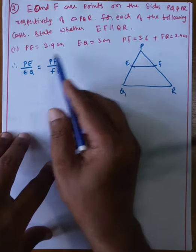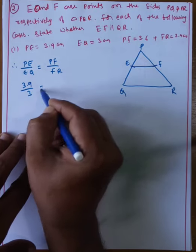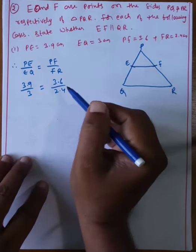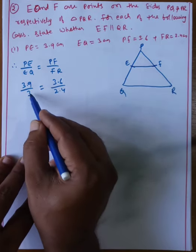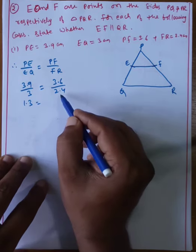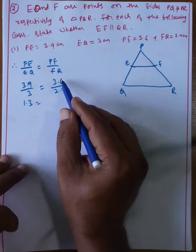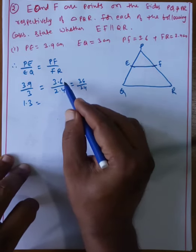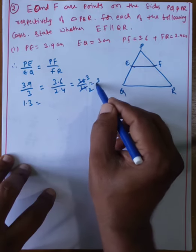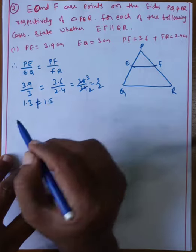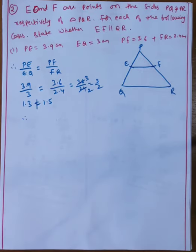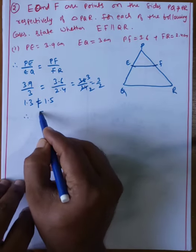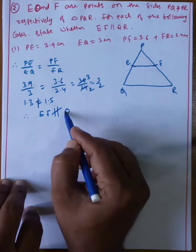Case 1: PE by EQ equals 3.9 by 3, which is 1.3. And PF by FR equals 3.6 by 2.4. Simplifying 36 by 24 gives 3 by 2, which equals 1.5. Since 1.3 is not equal to 1.5, the ratios are not equal. Therefore EF is not parallel to QR.